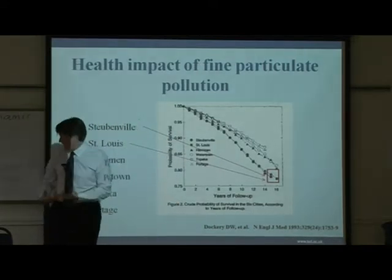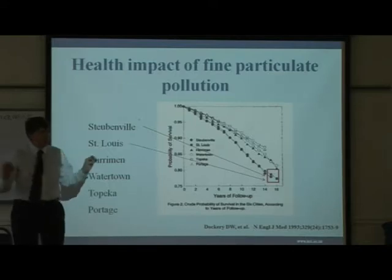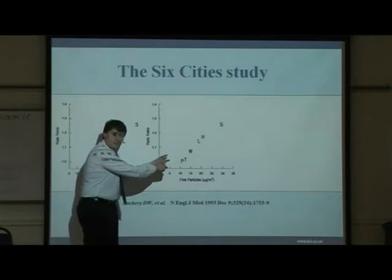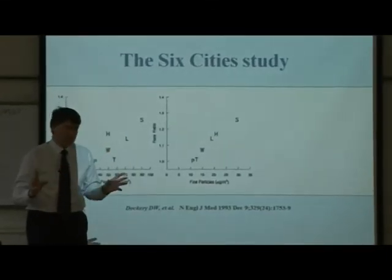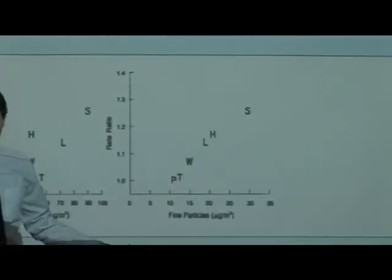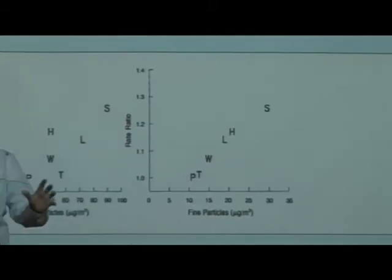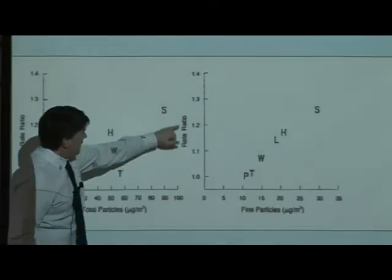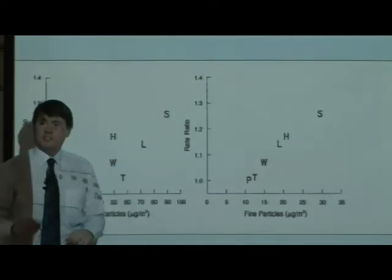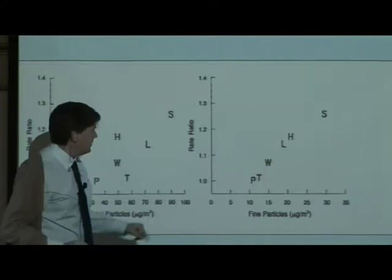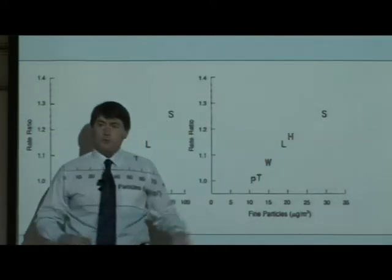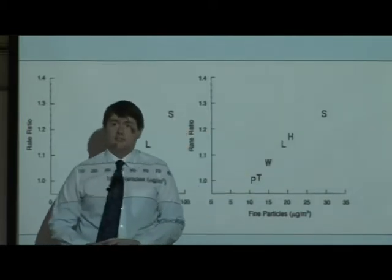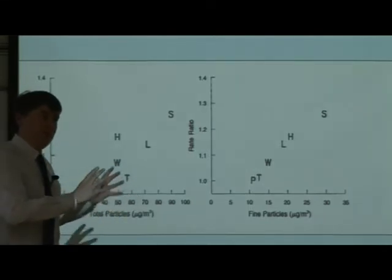From that, they looked at your odds of dying in relation to pollution over those cities over the period — and that's where the famous graphs come from. There is no more famous graph in air pollution. When you do science on large populations, nothing ever falls on a nice straight line — you get a cloud of data. But here, looking at fine particles, with Portage set as a value of one, it's about 30% more likely to die prematurely in Steubenville. The linear relationship is absolutely phenomenal.